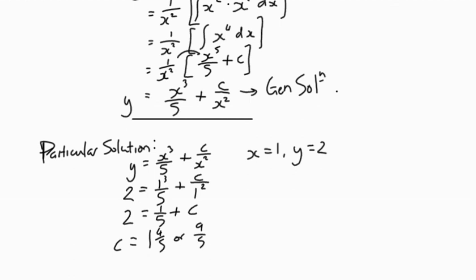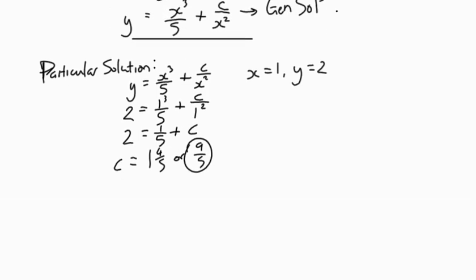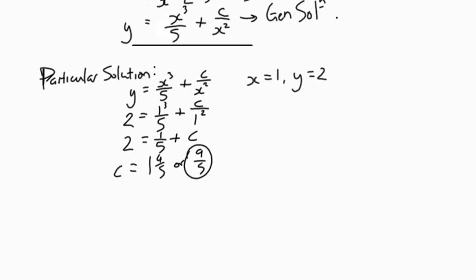So we can see here, where does c go? It goes into that second fraction. So we're going to use the fractional version here because we said the general solution looks like that. So our particular solution: y = x³/5 + 9/(5x²). And that is our particular solution.